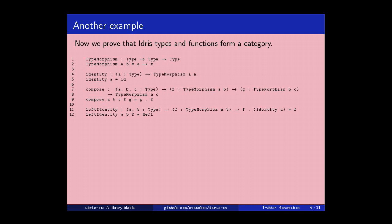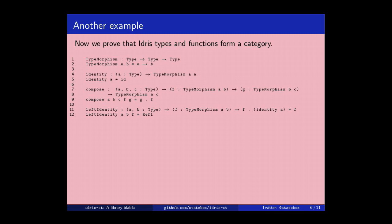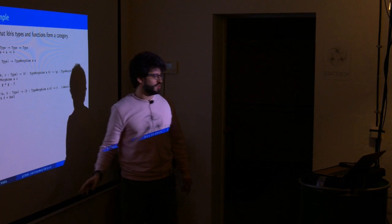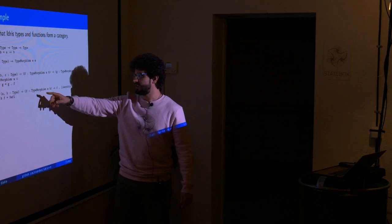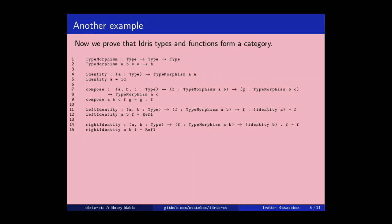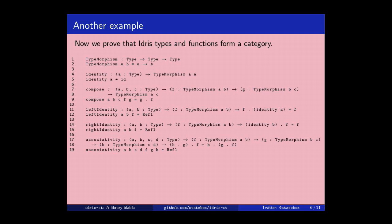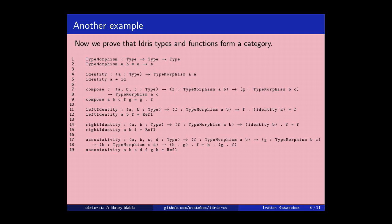Okay, identity laws. Well, identity laws are easy because the point is that Idris automatically reduces g composed with identity to g. So basically, to provide the identity law, you just say, okay, you give me two types, you give me a function from a to b, and this thing is just Refl. So this thing is just saying, because Idris already considers these two things equal, so we have to do nothing. Right identity is a symmetrical case, so it's the same. And also, associativity is the same. Because, again, the composition of functions in Idris is naturally associative. And that's it.